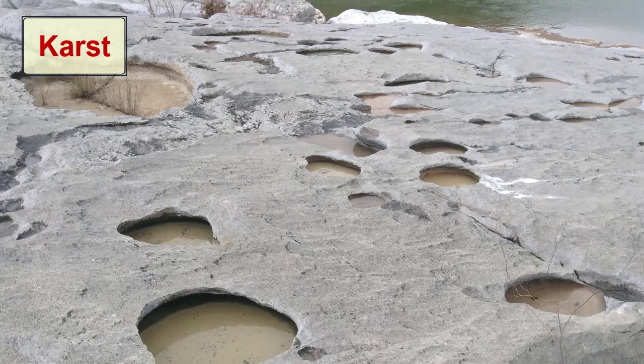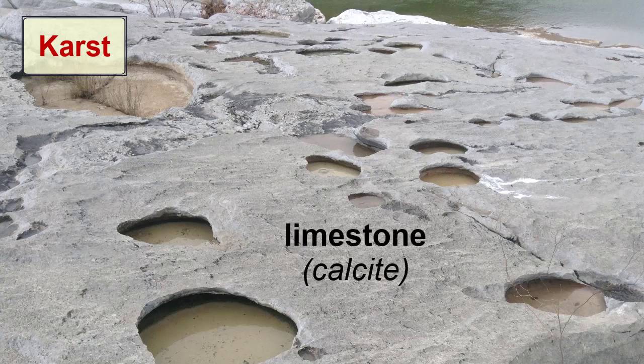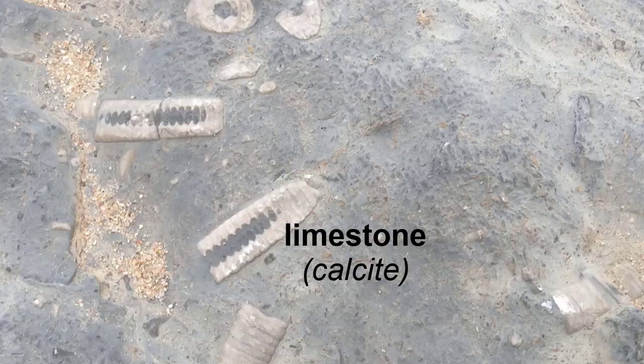The term karst refers to geographic areas that display landforms produced by the dissolution of surface rocks. Typically, these regions consist predominantly of limestone, a sedimentary rock made of calcite. In limestone, calcite is usually in the form of microscopic crystals that are recrystallized shells or exoskeletons of organisms such as corals that lived in the area at some time in the past.